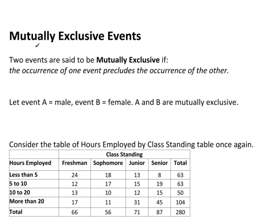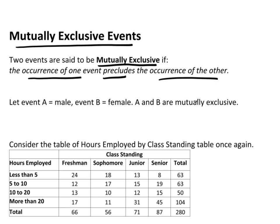Let's move on to the idea of mutually exclusive events. Two events are said to be mutually exclusive if the occurrence of one precludes — in other words, prevents — the occurrence of the other. So they're mutually exclusive if one happens, the other cannot happen. As an example, let event A be we observe a male and event B be we observe a female. A and B are mutually exclusive. You can't pull one person out of a group and they're both male and female.